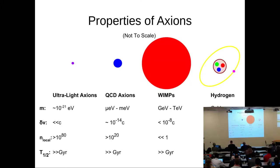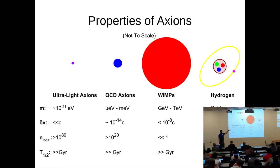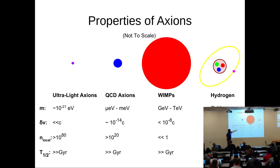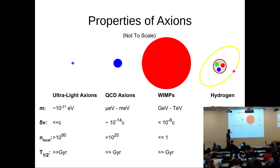Just to get everybody on the same page on what an axion is in terms of mass scale: we have the WIMP, which people know about. It's formed thermally, but because of its large mass it has a very small velocity dispersion, and we call it cold. The QCD axion and the ultralight axions are significantly less massive - micro-eV to meV for a QCD axion. But they're not formed thermally, and so they are also cold for a very different reason, and indeed very cold.